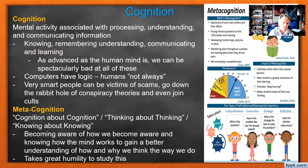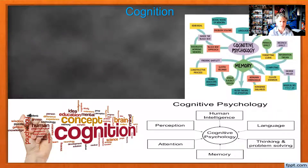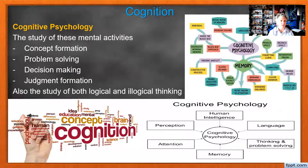Metacognition is cognition about cognition — thinking about thinking, knowing about knowing, becoming aware of how we become aware, and knowing how our mind works and how other minds work. It takes great humility to do this, to acknowledge that you could be wrong and to genuinely try to understand why somebody else believes what they do.